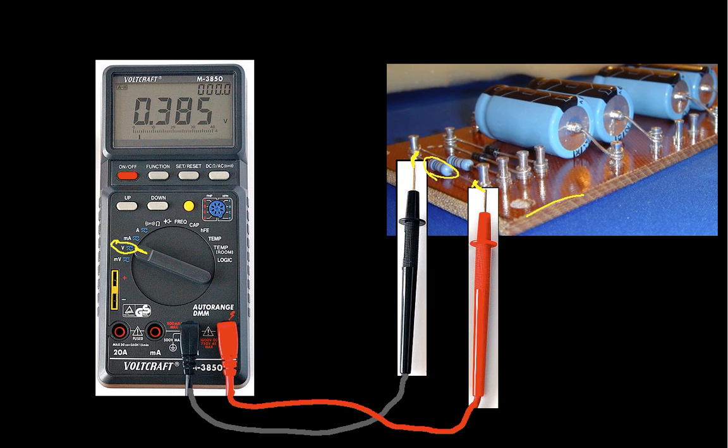And then I just hold it there. The numbers will change for a bit as it settles down, and then you've got the voltage across the resistor. That's not so hard, is it?